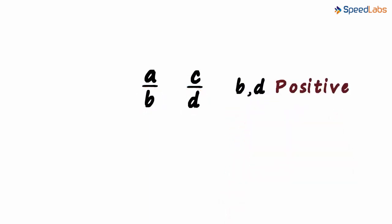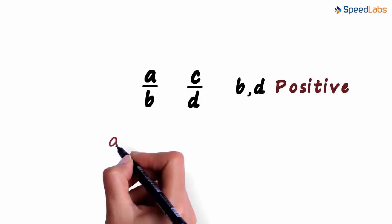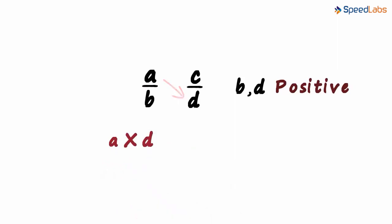To compare them, we just need to look at two products. First, the product of A and D, and second, the product of B and C. But what do we do with these products? How do these two products help us compare the two rational numbers?